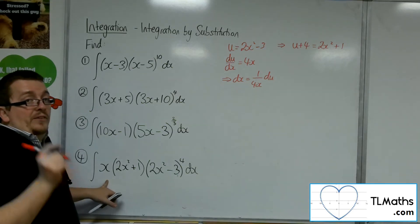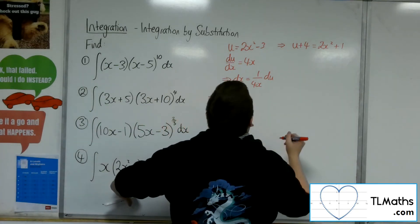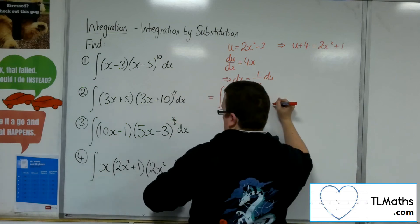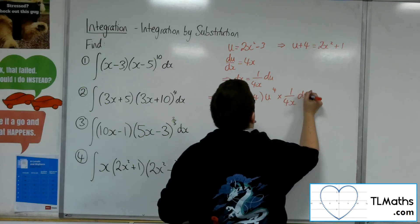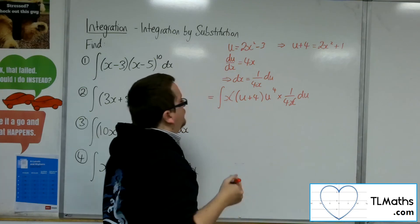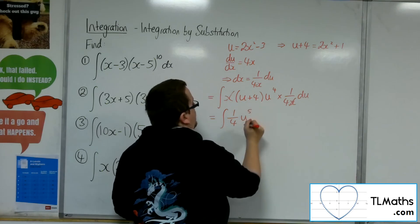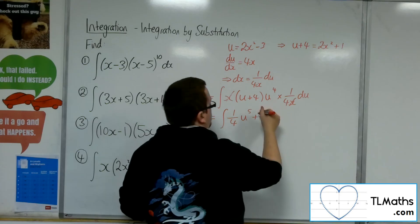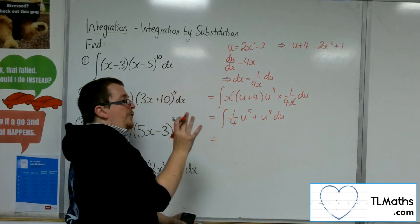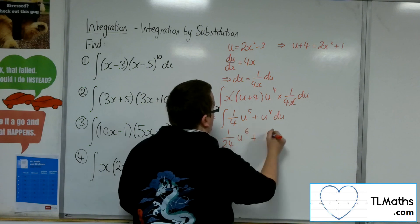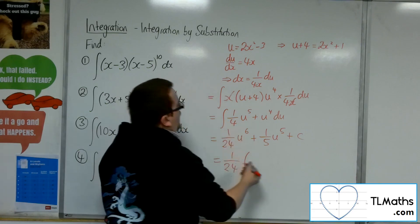What's going to happen is there's going to be convenient cancellation with x. So we have the integral of x times u plus 4 times u to the power of 4, and dx was 1 over 4x du. The x's cancel. Multiplying through, we've got one quarter: u times u to the 4 is u to the 5, plus 4 lots of one quarter is just 1, so u to the 4 du. Integrating and adding 1 to the power: one twenty-fourth u to the 6 plus one fifth u to the 5 plus c. Substituting u back in as 2x squared minus 3. That is the answer for number 4.